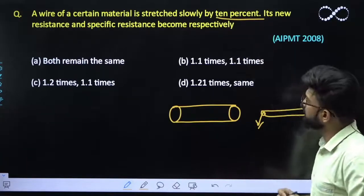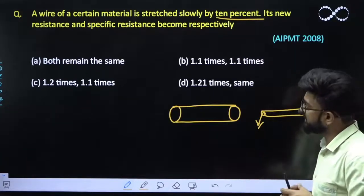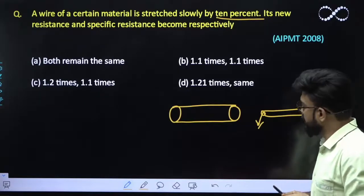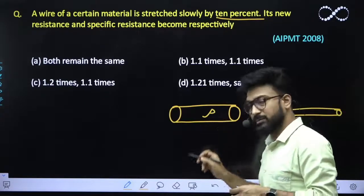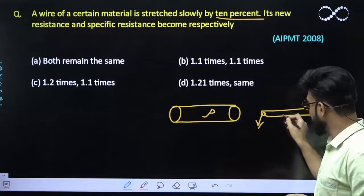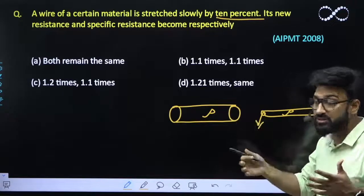So the new resistance and the specific resistance becomes respectively. We know that specific resistance only depends upon the material. These two would have similar materials so the specific resistance, which is also called resistivity, would be similar.